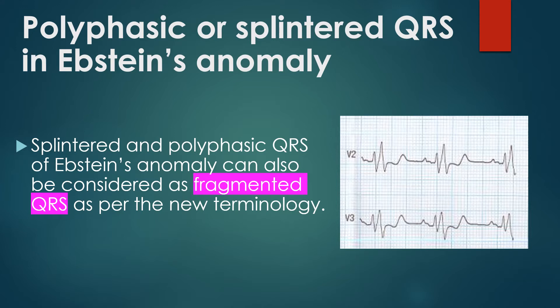Splintered and polyphasic QRS of Ebstein's anomaly can also be considered as fragmented QRS per the new terminology. Fragmented QRS is a marker of myocardial scar and consequent arrhythmias in ischemic and non-ischemic cardiomyopathy. Similarly, fragmented QRS has been shown to be associated with a larger region of atrialized right ventricle and increased risk of arrhythmic events in Ebstein's anomaly.